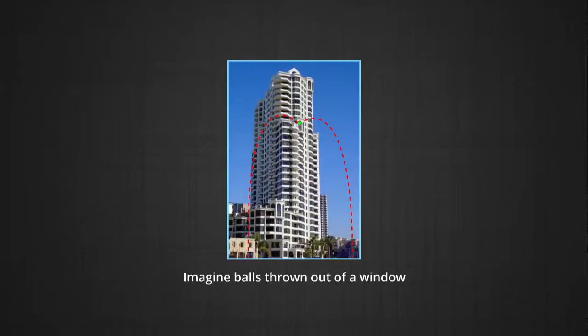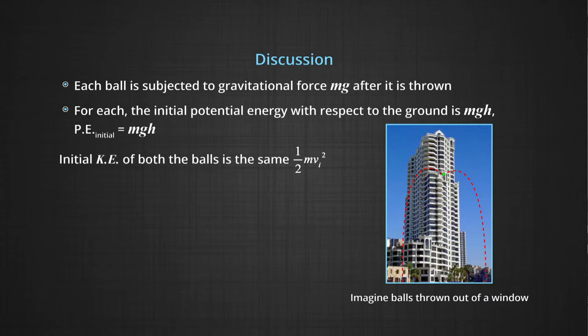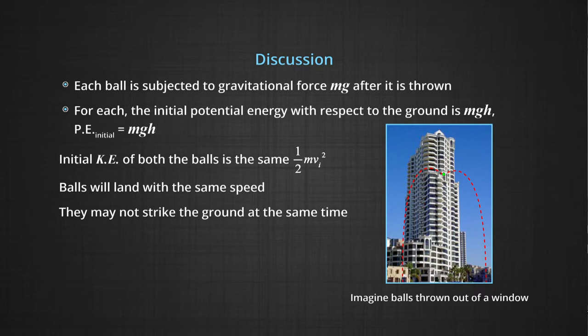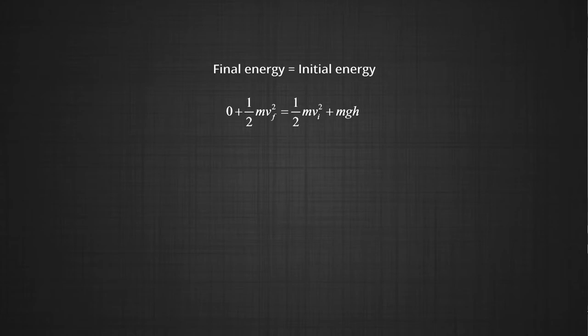Let us see how this happens. Each ball is subjected to gravitational force mg after it is thrown. For each, the initial potential energy with respect to the ground is mgh and the initial kinetic energy is (1/2)mv_i². The balls will land with the same speed. They may not strike the ground at the same time, but since (1/2)mv_i² + mgh = (1/2)mv_f² + 0, v_f is the same for all. Note: we have assumed no energy loss due to air resistance.